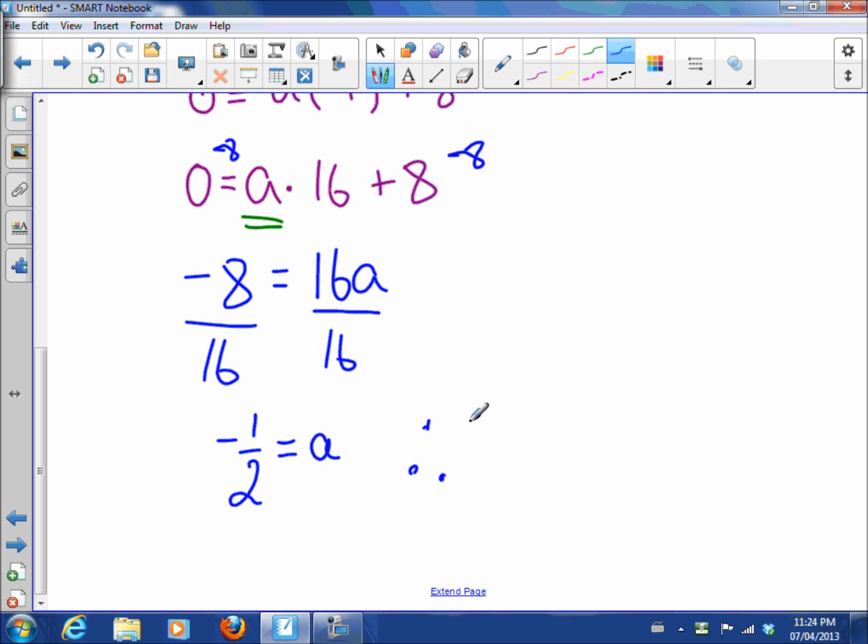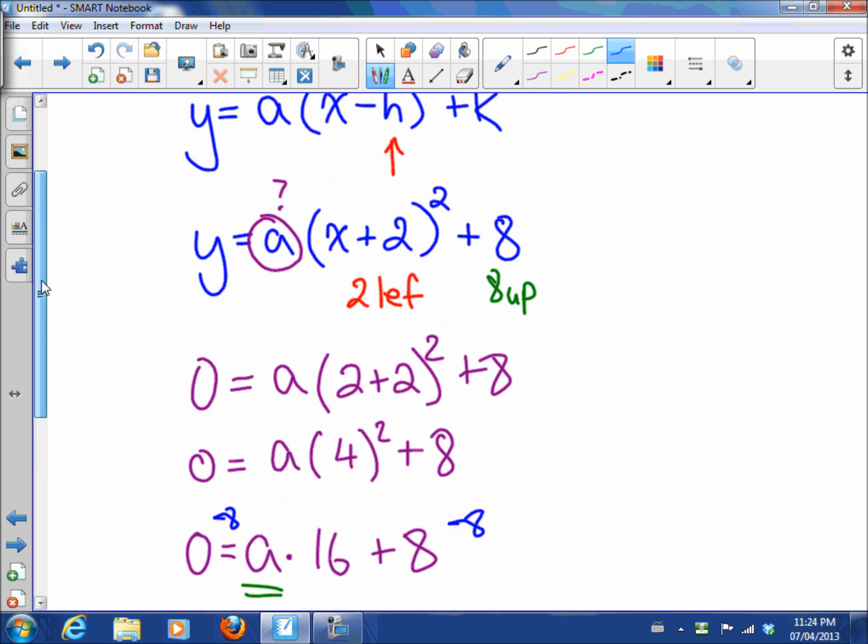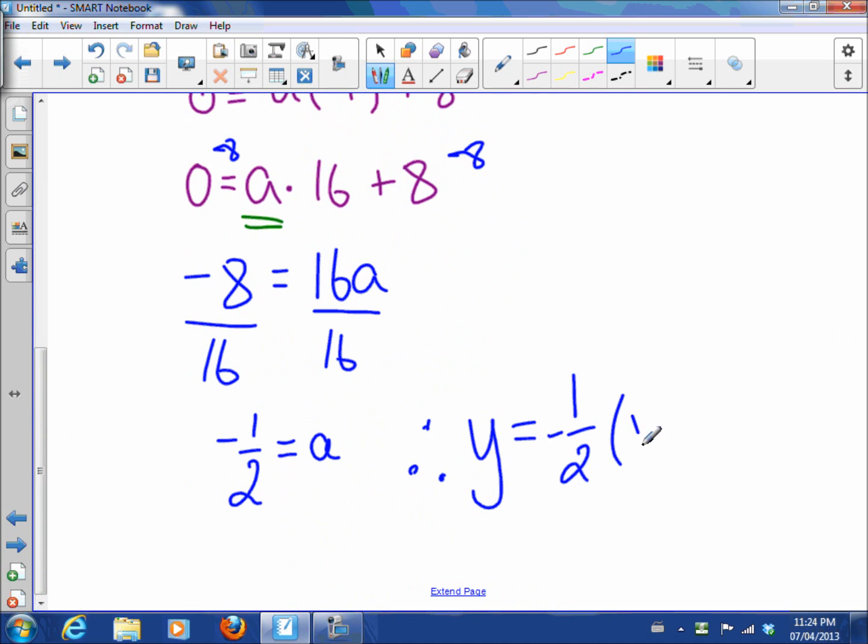So that makes the equation negative 1 over 2. And then we've got to remember what that first part was, x plus 2 squared plus 8.